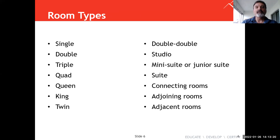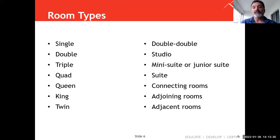For room revenue, you need to know the terminology. Single occupancy means one person; double means two people. A double-double means two double beds, usually two queens. A studio is a small suite. A mini or junior suite is larger, with a living room. Then you have queen, king, and twin rooms. Not many hotels have twin rooms anymore unless it's family travel, like on Disney properties where they would have an adjoining twin room with bunk beds for children.